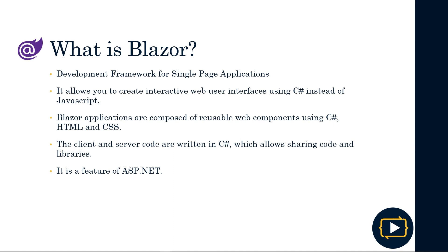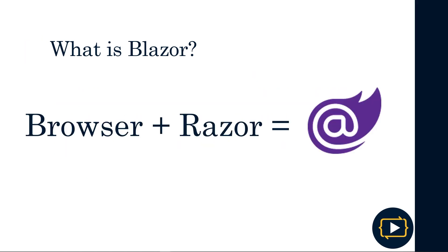Blazor applications are based on reusable web components that we can write with C#, HTML, and CSS. Similarly, both client and server logic are written in C#, which enables code and library sharing. Finally, Blazor is a feature of ASP.NET. As a fun fact, the name Blazor is a combination of the words Browser and Razor, which is the language we will use in Blazor and discuss in depth in future lessons.